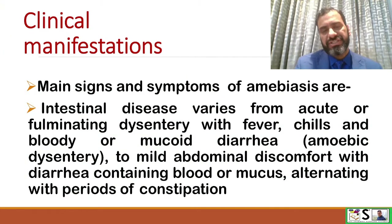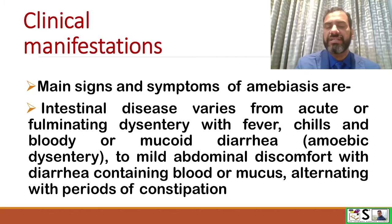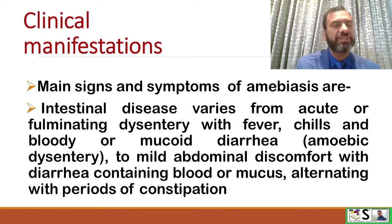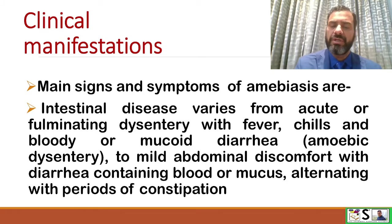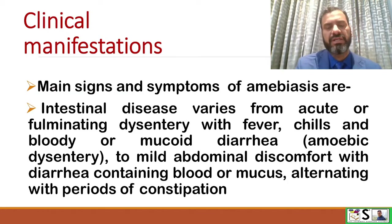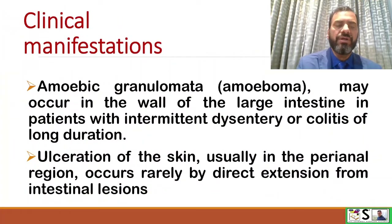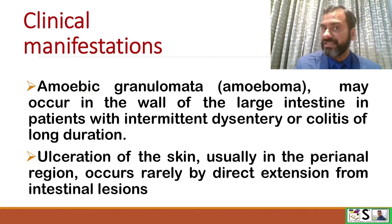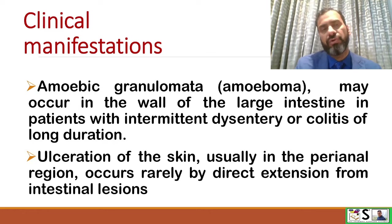Clinical manifestations of amoebiasis: The main symptoms of intestinal disease vary from acute or fulminating dysentery with fever, chills, and bloody or mucoid diarrhea, to mild abdominal discomfort with diarrhea containing blood and mucus alternating with periods of constipation. Amoebic granulomata may also occur in the walls of the large intestine in patients with intermittent dysentery or colitis of long duration.